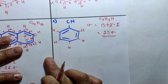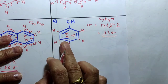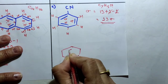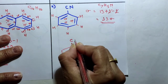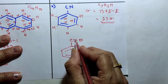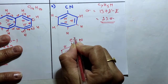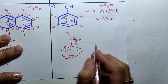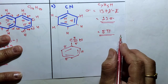Now calculating pi bonds in cyanobenzene. The benzene ring has 3 double bonds giving 3 pi bonds, but the cyanide group adds more. Carbon has 4 valency — 1 valency to the ring and 3 remaining form a triple bond with nitrogen. In a triple bond, 1 is sigma and 2 are pi bonds. Therefore cyanobenzene contains 5 pi bonds total — 13 sigma bonds and 5 pi bonds.